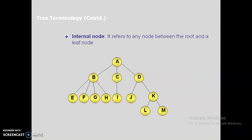An internal node, also called an intermediate node or non-terminal node, refers to the nodes between the root and the leaf nodes. The leaf nodes are the terminal nodes. Here the root is A, so the intermediate nodes B, C, D, and K are called internal nodes or non-terminal nodes.